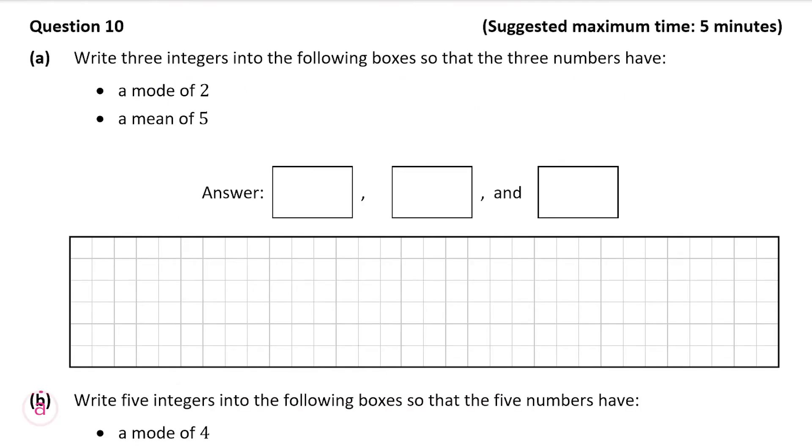Part A of the question wants us to write three integers so that the three numbers have a mode of 2 and a mean of 5. So a mode of 2 means that the number that's there the most must be 2. Now we have three integers so that means that at least two of these must be 2. We can't have the three of them as 2 because if the three of them are 2 then the mean will also be 2. So we can just have two of them, so we're going to put the first two integers as 2.